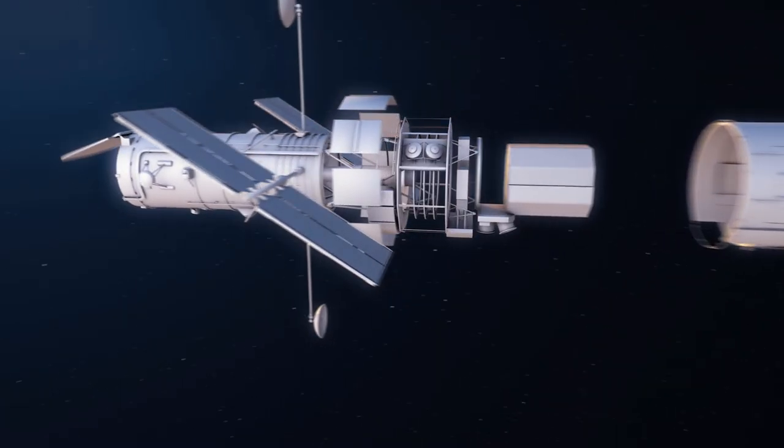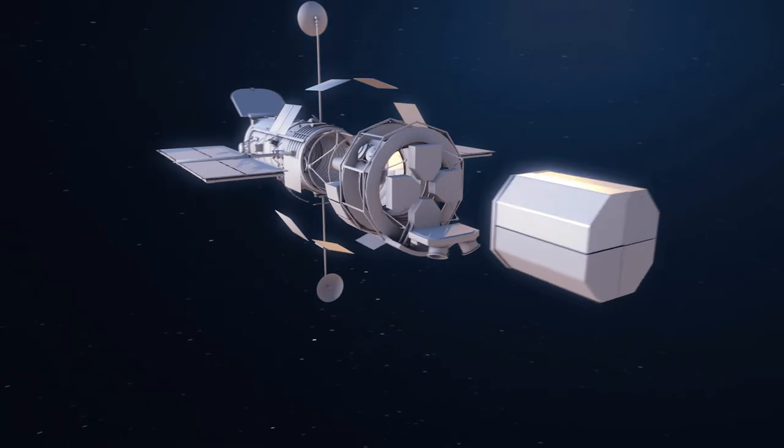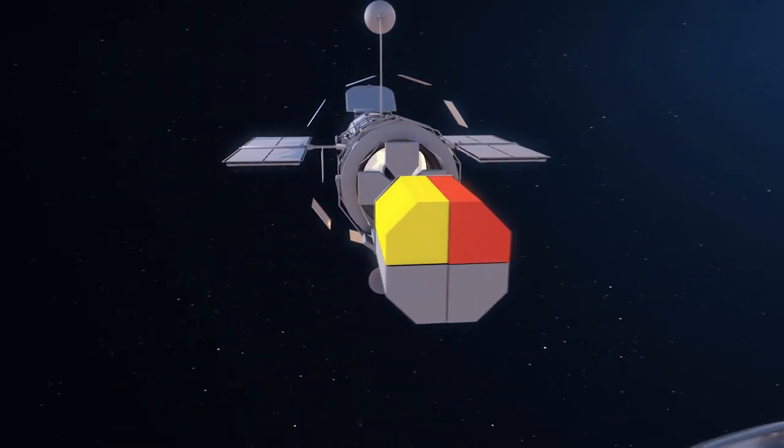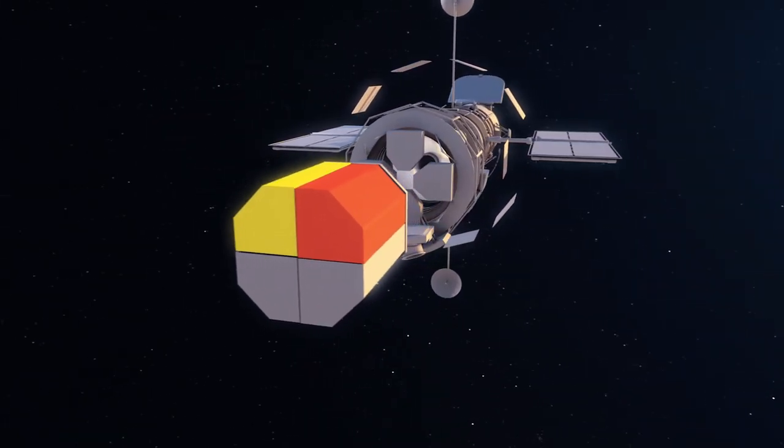Hubble is equipped with two spectrographs: the Space Telescope Imaging Spectrograph, which was installed on the telescope in 1997, and the Cosmic Origins Spectrograph, which was installed in 2009.